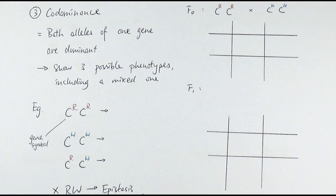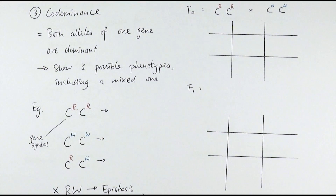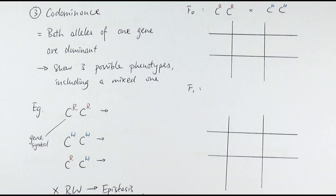Codominance means we're in a situation where both alleles of one gene are dominant. Rather than having a capital letter for the dominant allele and a small letter for the recessive one, both alleles are represented with capital letters but show slightly different traits. Because of that, you can have three possible phenotypes, and one of them would be a mixed one.